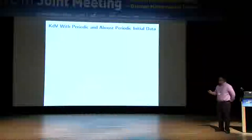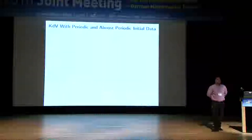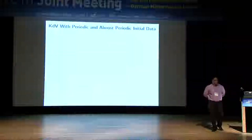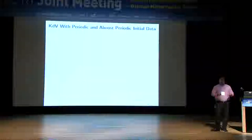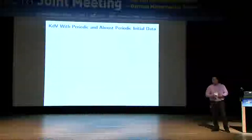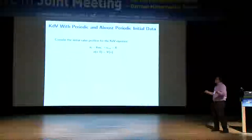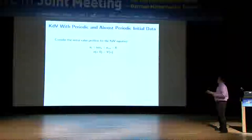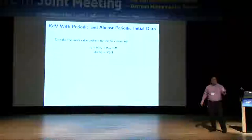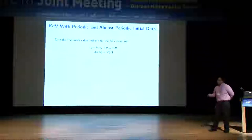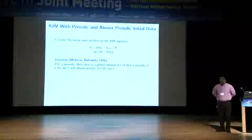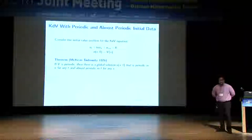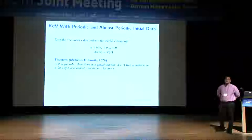The goal of the talk is to discuss different solutions — not solitons which vanish at infinity, but rather extended waves. The first case to consider is periodic initial data. Looking at the Cauchy problem, the initial datum will be denoted by V of X. There is an old result from 1976 by McKean-Trubowitz which tells you the behavior of the solution when you start with a periodic function at time zero.